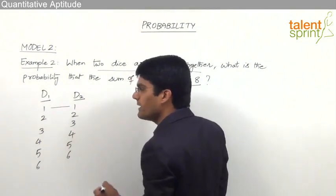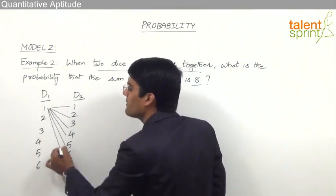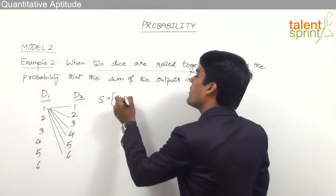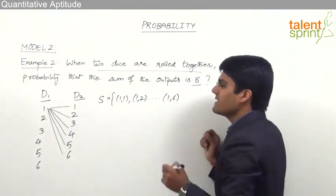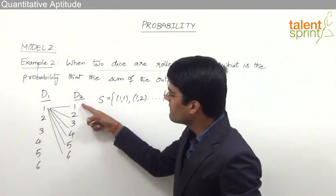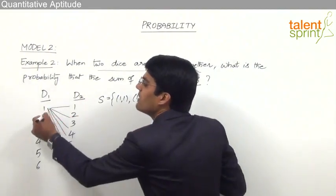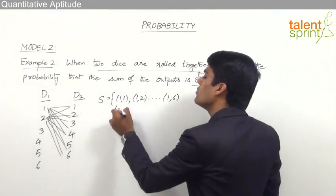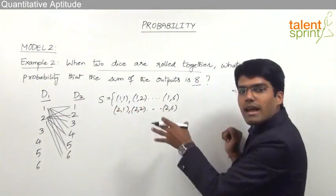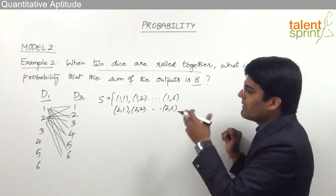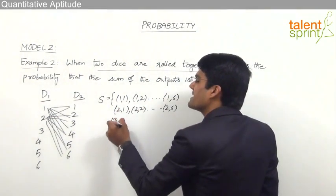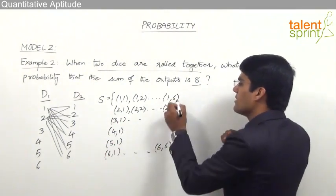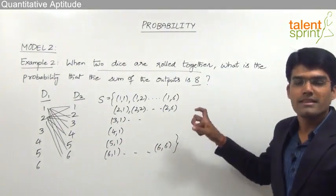The sample space consists of ordered pairs: (1,1), (1,2), up to (1,6); then (2,1), (2,2), up to (2,6); and similarly (3,1), (4,1), (5,1), (6,1), all the way up to (6,6). Altogether there are 36 outcomes in the sample space.